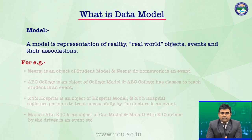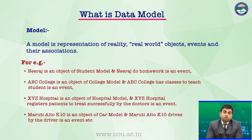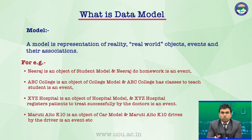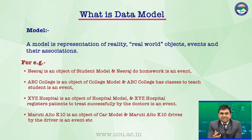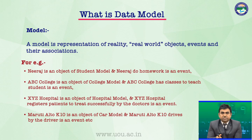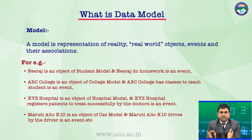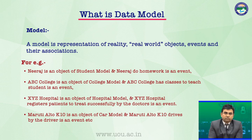For example, एक student है नीरज, जो कि एक object है student model का. और नीरज जो homework करेगा वो उसका event है. ABC College is an object of college model and ABC College has classes to teach — वो एक event है. XYZ Hospital is an object of hospital model and XYZ Hospital registers patients — वो एक event है. Auto K10 car model का object है और Auto K10 को driver drive करेगा यह उसका event है. That is the concept of model and object.